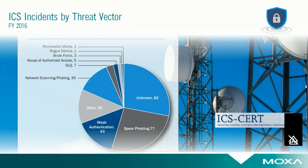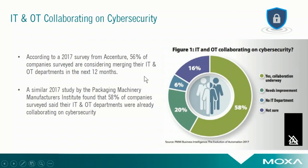Looking at the types of threats reported in the 290 incidents in 2016, we see that phishing, weak authentication, and network scanning were some of the top threat vectors. Another thing to note is that 28% of the incidents that were reported did not have enough information to determine the source of the threat. As a result of this growing threat, companies are taking industrial cybersecurity much more seriously, and we're seeing more and more collaboration between IT departments and OT engineers to reduce their overall risk of a breach.